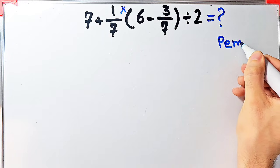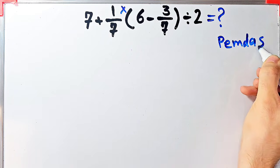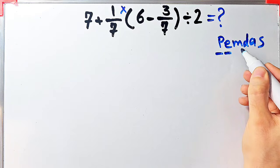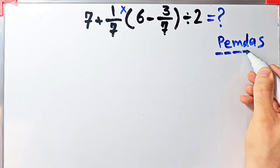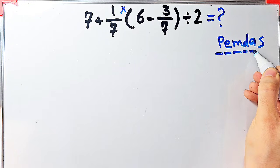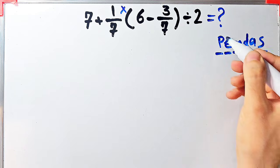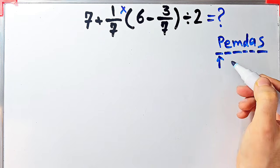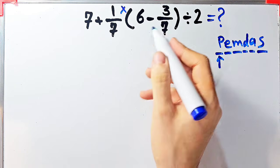In PEMDAS: P stands for parentheses, E stands for exponent, then multiplication, division, addition, and subtraction. First we simplify the parentheses. Inside the parentheses we have six minus three over seven.